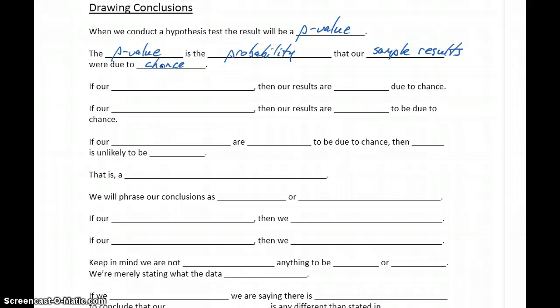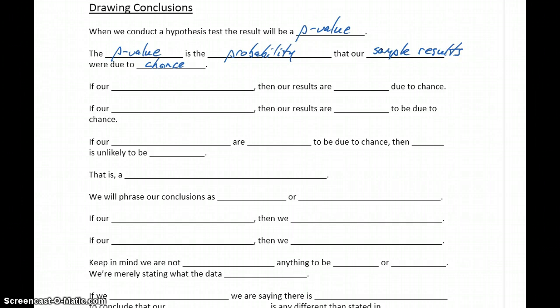So when we conduct a hypothesis test, we'll generate a p-value that tells us the probability that our sample results were due to chance. If they were due to chance, there's no reason to throw out our assumption about the null hypothesis. If they weren't due to chance, then the evidence is showing that our population parameter is something different than what we're assuming it to be.